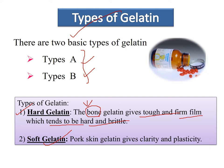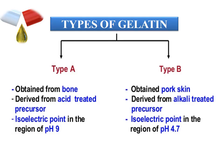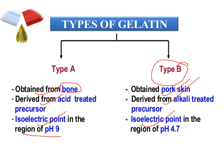For soft gelatin, the gelatin used is obtained from pork skin. Pork skin gelatin gives clarity and plasticity, which is why soft gelatin capsules look plastic and soft. Regarding Type A and Type B: Type A is obtained from bone via acid treatment, and its isoelectric point is in the region of pH 9. Type B is obtained from pork skin via alkali treatment, and its isoelectric point is near pH 4.7.